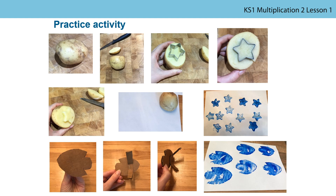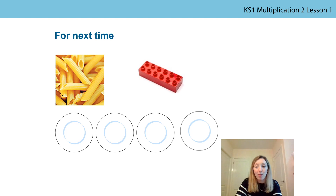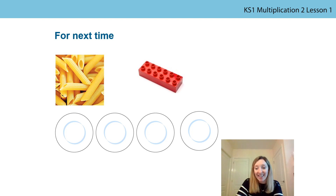Remember, we've learnt today that equal groups have the same number of objects in them and unequal groups have a different number of objects in them. I hope you have a lovely time practising and exploring equal and unequal groups. For next time, please bring four plates and at least 12 identical objects — it might be bricks, pasta, cutlery, or pencils, just as long as they're identical. You have done some amazing mathematics today — well done. See you next time, bye.